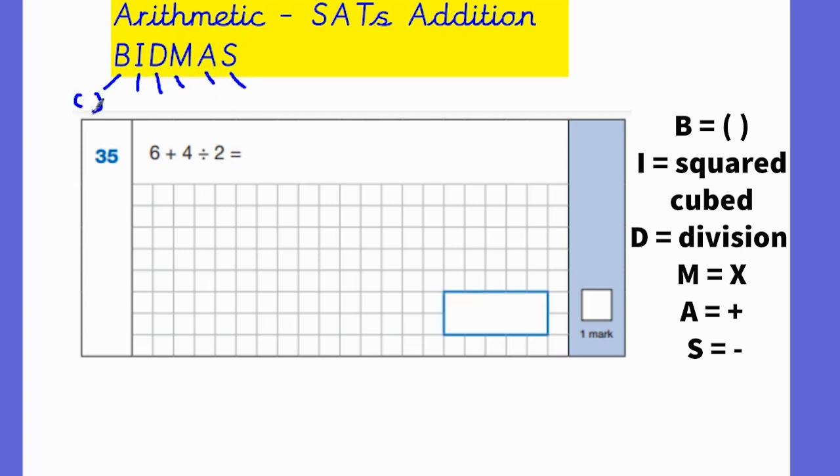If there is anything in brackets, we do that first. Indices means to the power of, so things like square numbers, cube numbers. Then you do your division, multiplication, addition, and subtraction. As long as the children do it in that order, they should get the question correct.